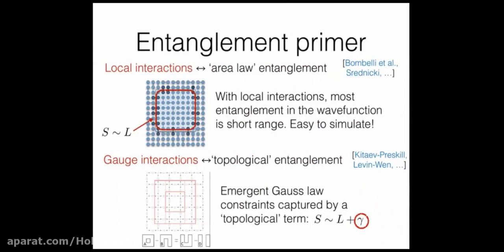Let me remind you about a couple of things that entanglement is good for that will be related to what I'm going to talk about later. One thing is that entanglement plays well with locality — spatial locality. Suppose I have a spin system: a lattice where on each site there's a spin, and the spins are coupled by a local coupling, so each spin only talks to its nearest neighbor, and the Hamiltonian is a sum over nearest-neighbor interactions.